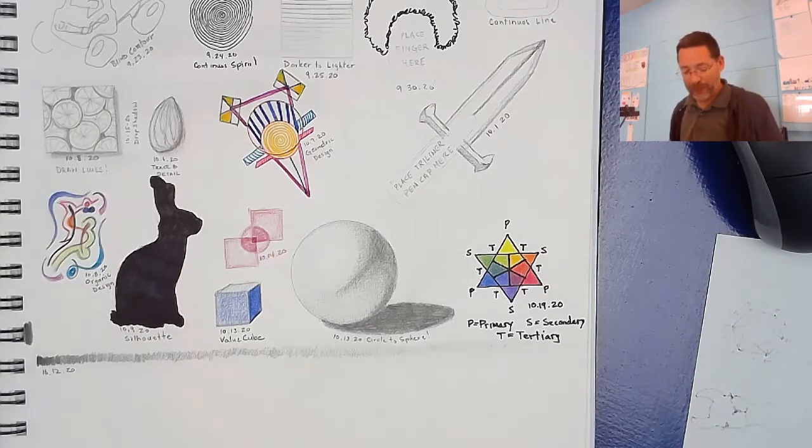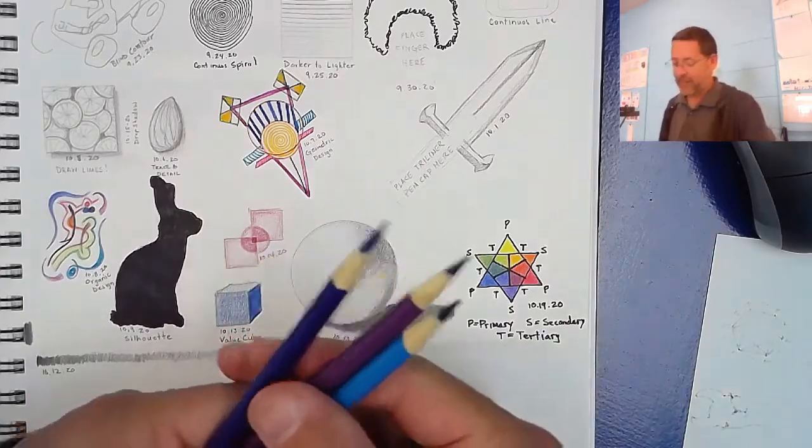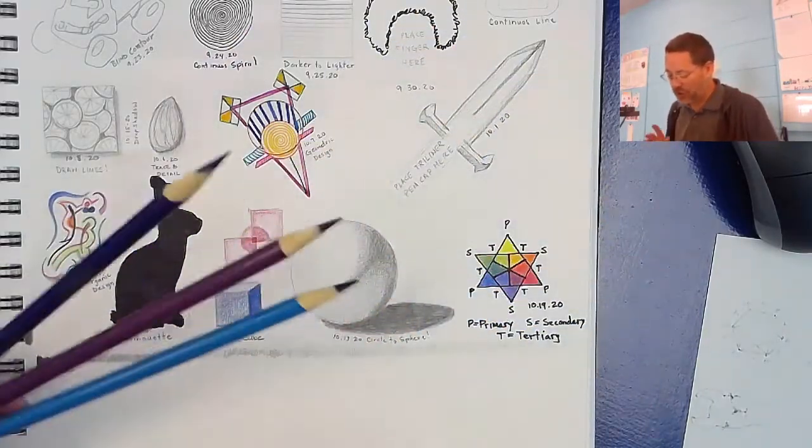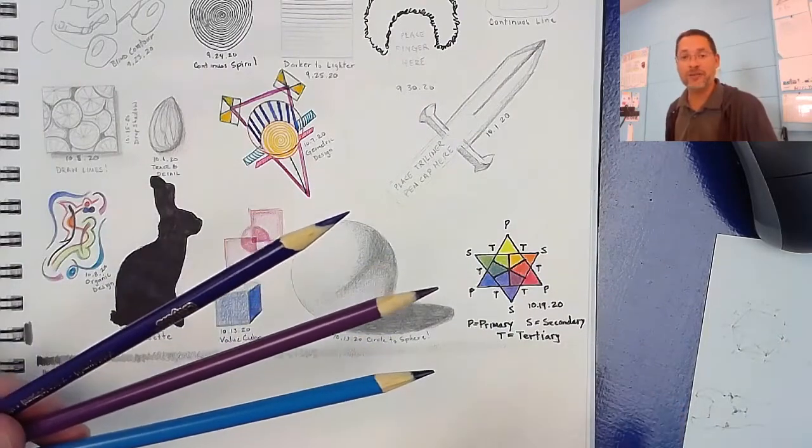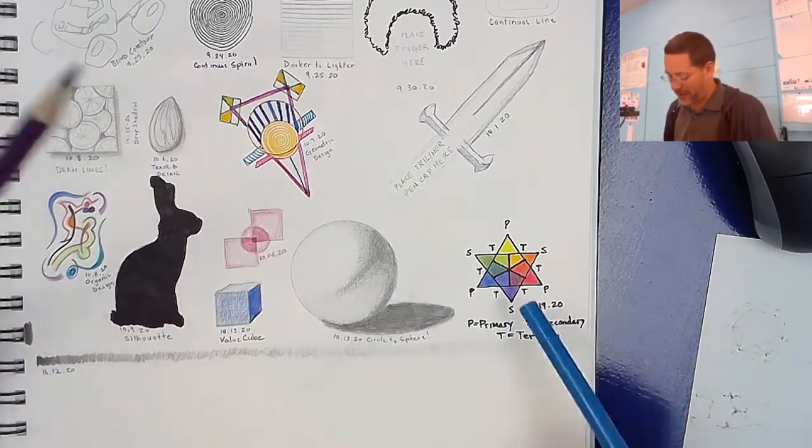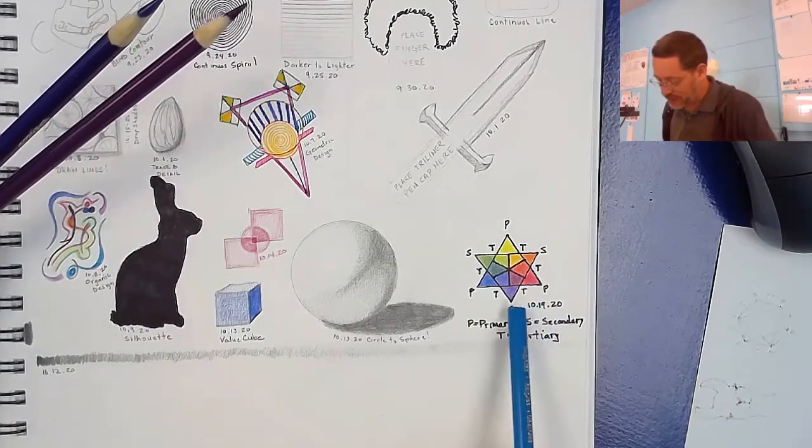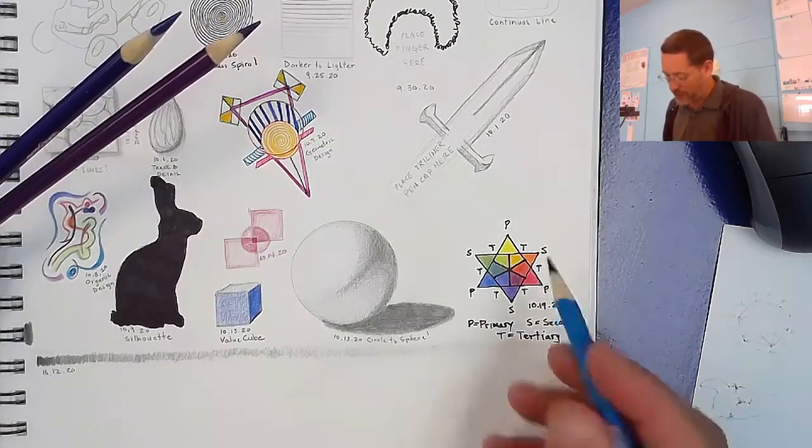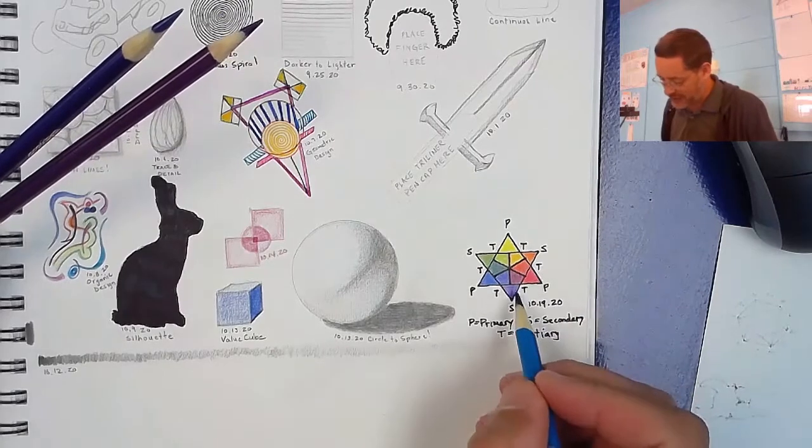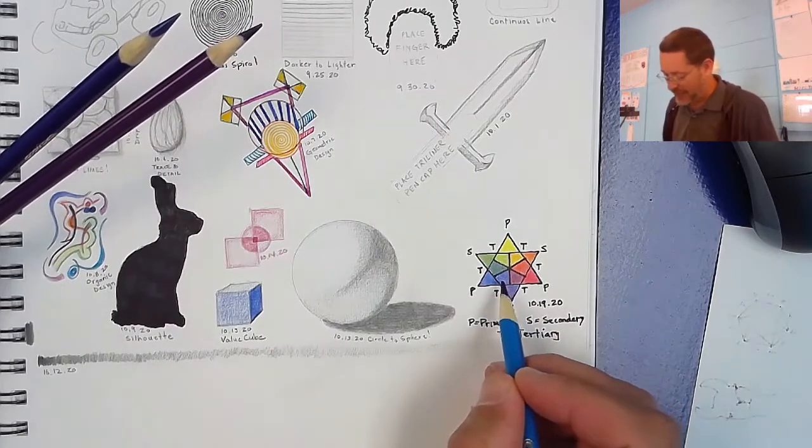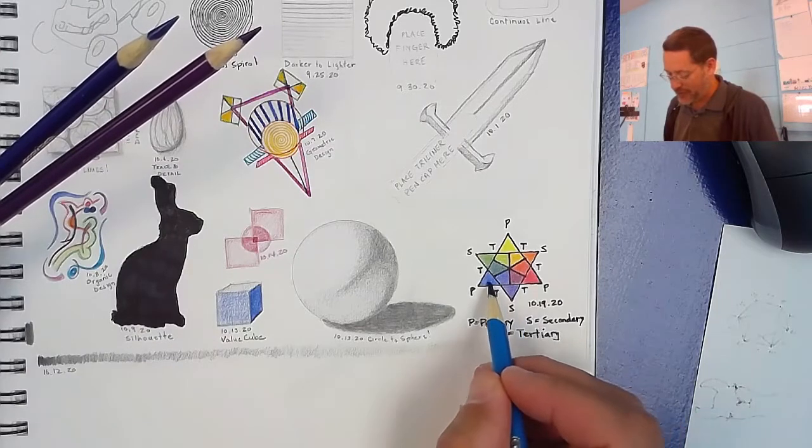So what we need here is analogous colors. What they are are colors that would be close to each other on the color wheel. So think about the color wheel that we made yesterday. Analogous colors would be colors close to each other. So purple, blue purple or blue violet and blue, those three colors are analogous.